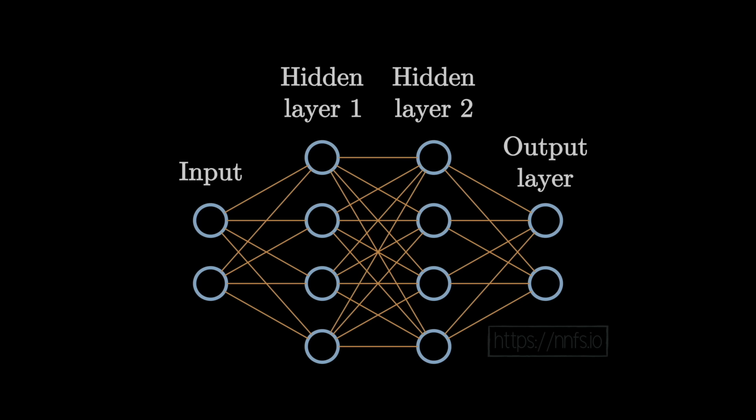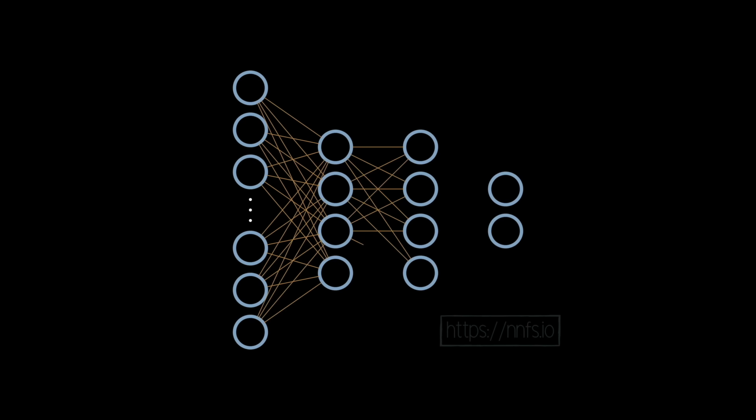For example, based on some sensor data, maybe we want to predict failure or not failure. You could either have one neuron or in this case we have two neurons, so the top neuron might be a failure neuron, the bottom neuron is a not failure neuron, and depending on which one has the higher value, that's the supposed prediction.